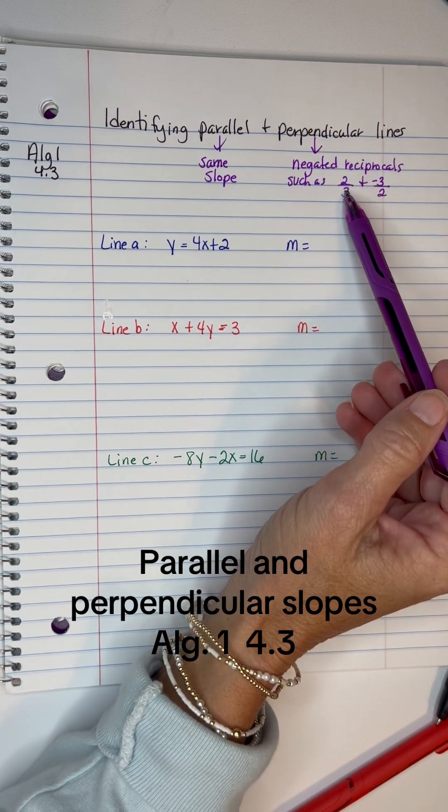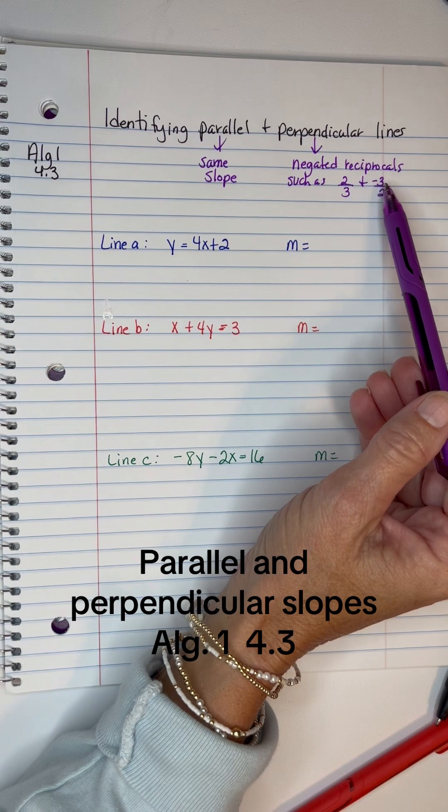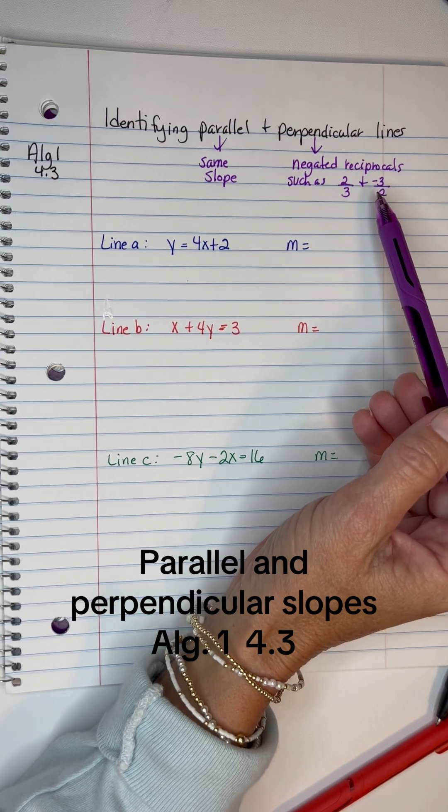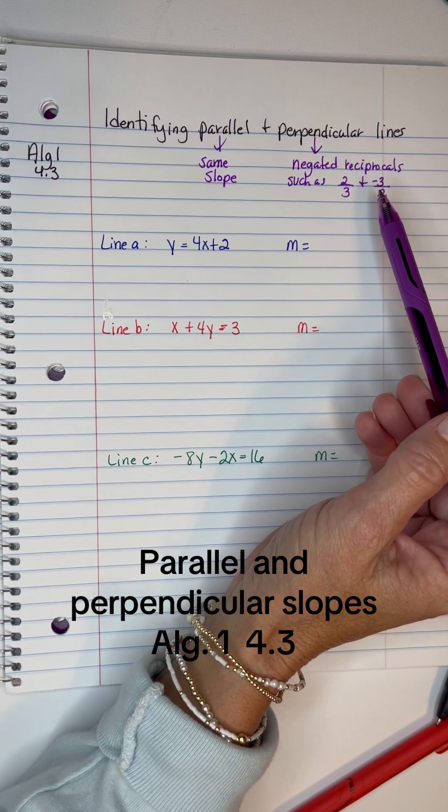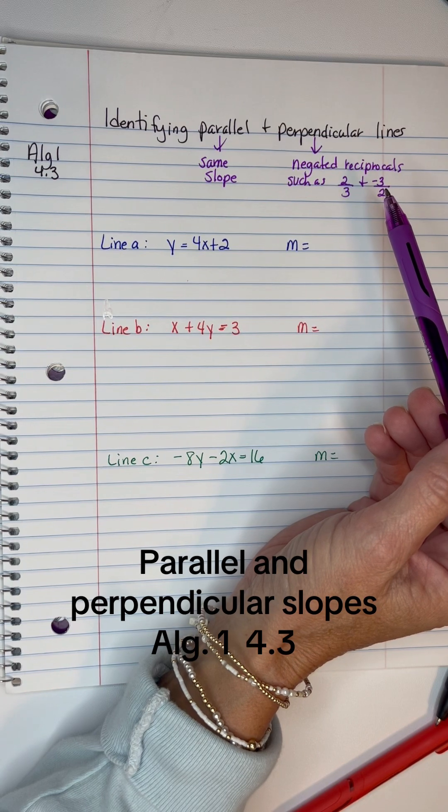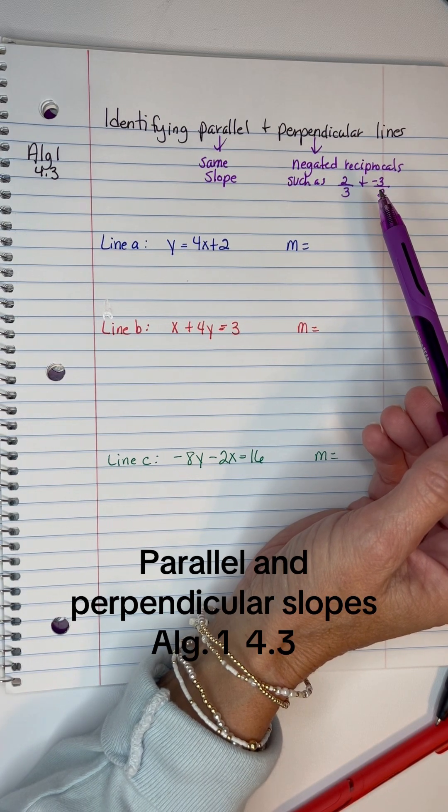An example would be 2/3 and -3/2. You flip one and change its sign and then you'll know that it is perpendicular. That means that the lines intersect to form a right angle.